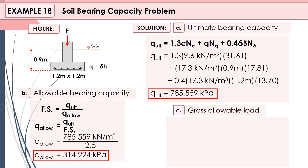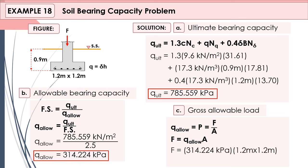For letter C, the gross allowable load is the induced load for the footing. We know that pressure equals force over area, so force equals pressure times area. That is 314.224 times the area of the footing, which is 1.2 × 1.2, and that is equivalent to 452.483 kN. It's straightforward — just formulas.